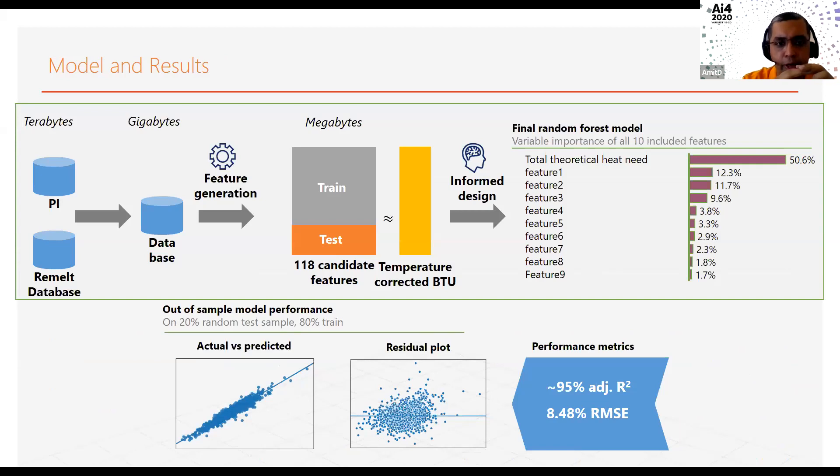I'm going to show you how the model building process happened. We use this historian system called Pi, which keeps track of sensor data at every one minute interval. Along with that, we have a database which keeps track of all the additions that happen to furnaces. Using those two data sources,